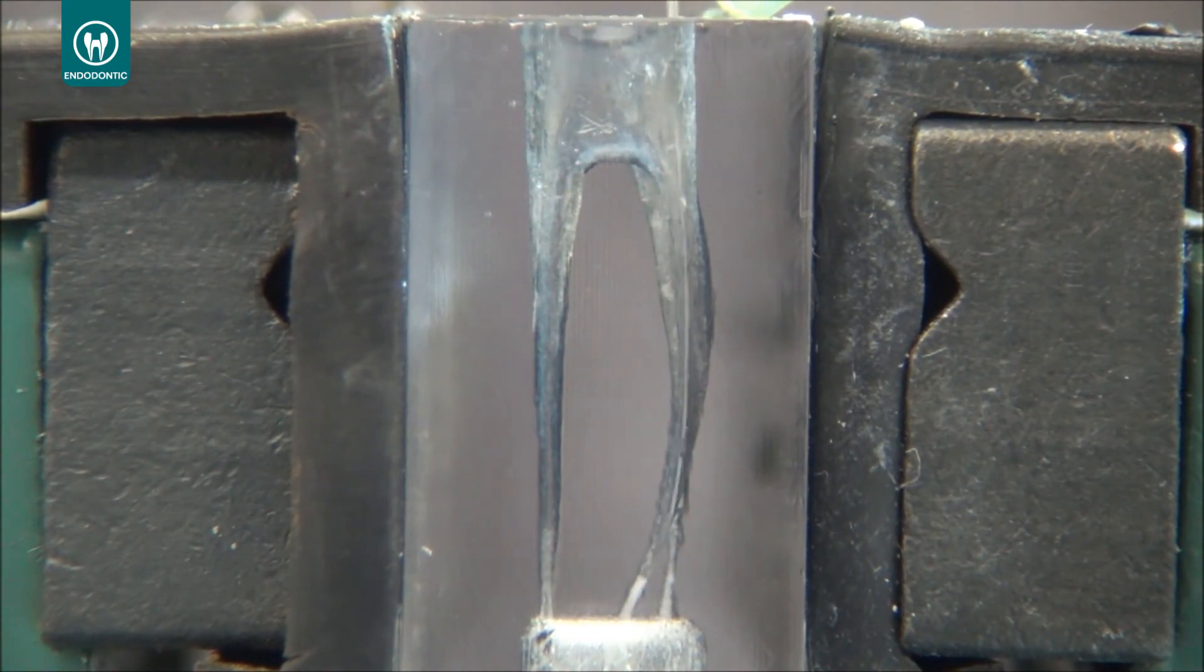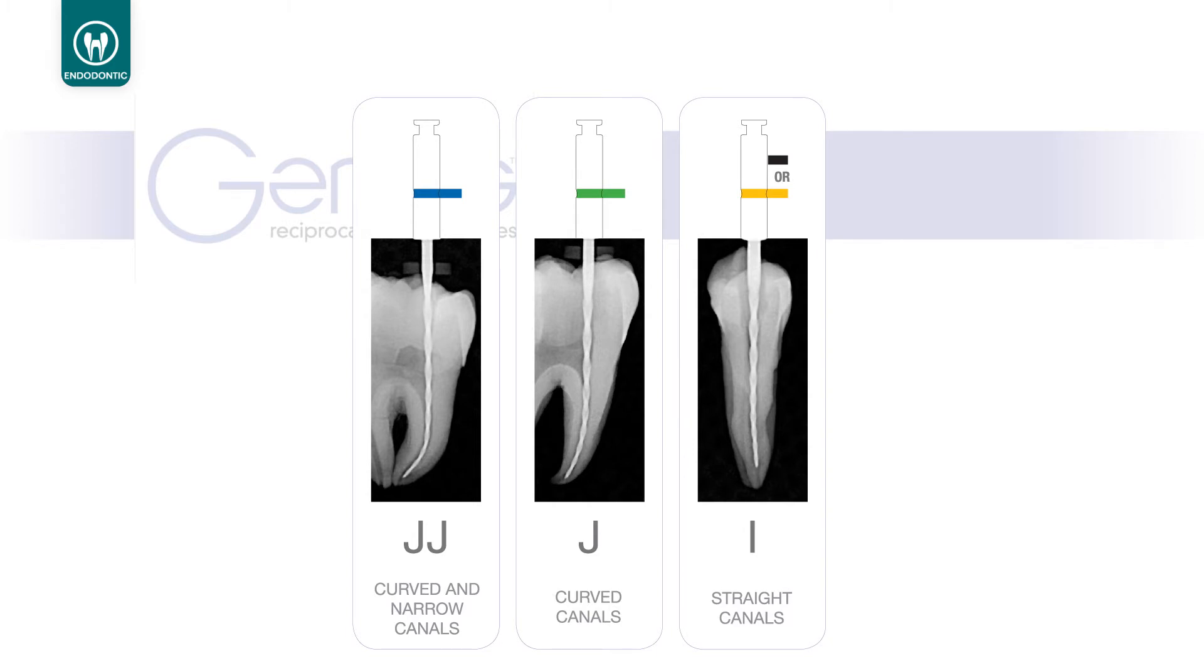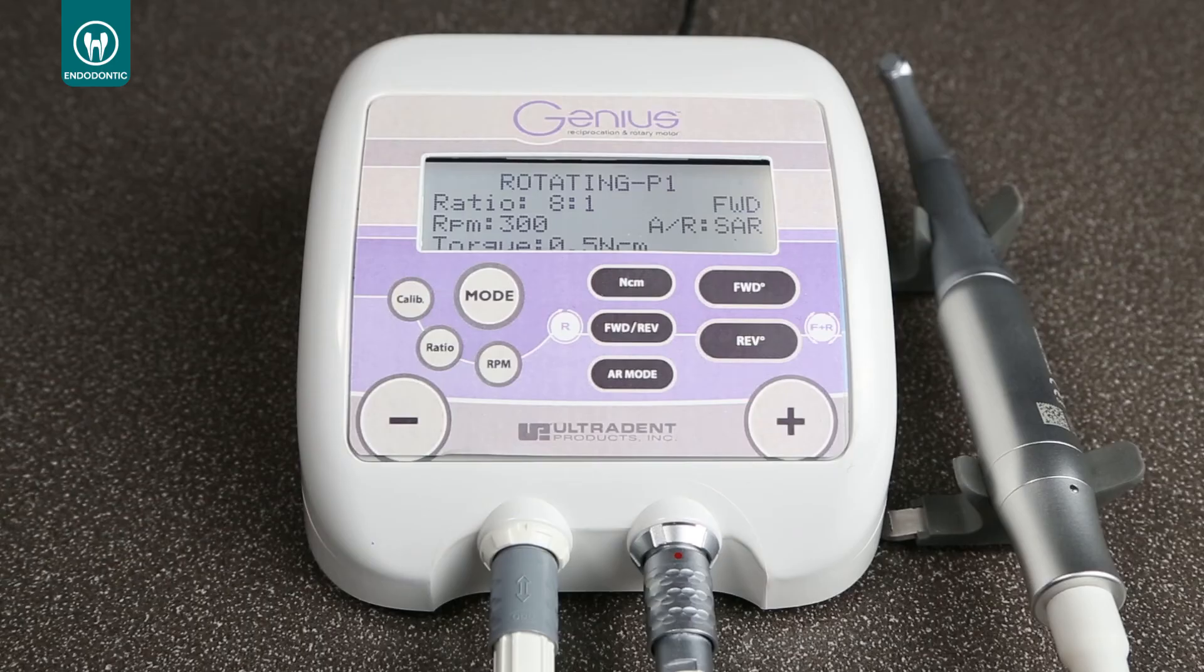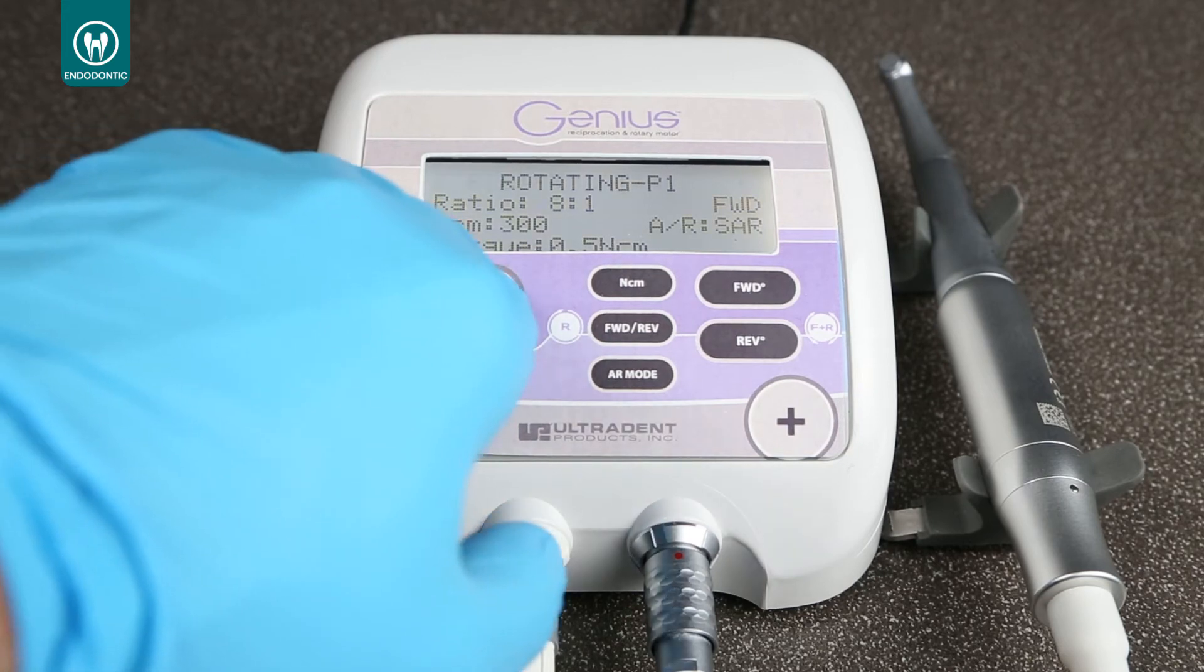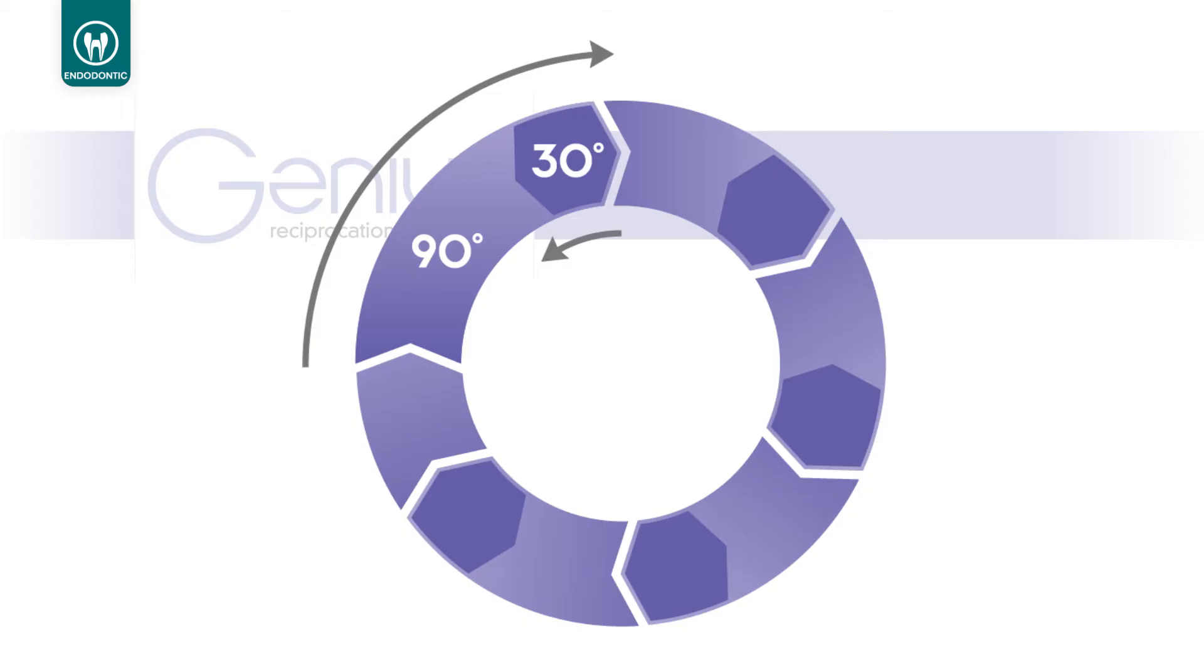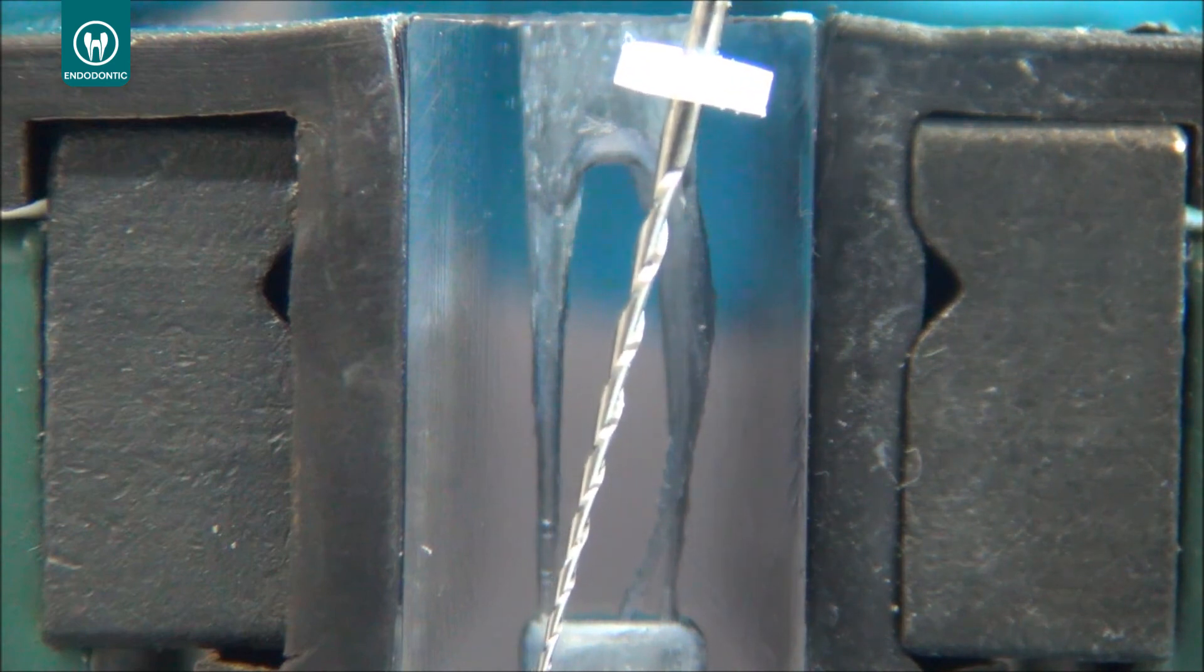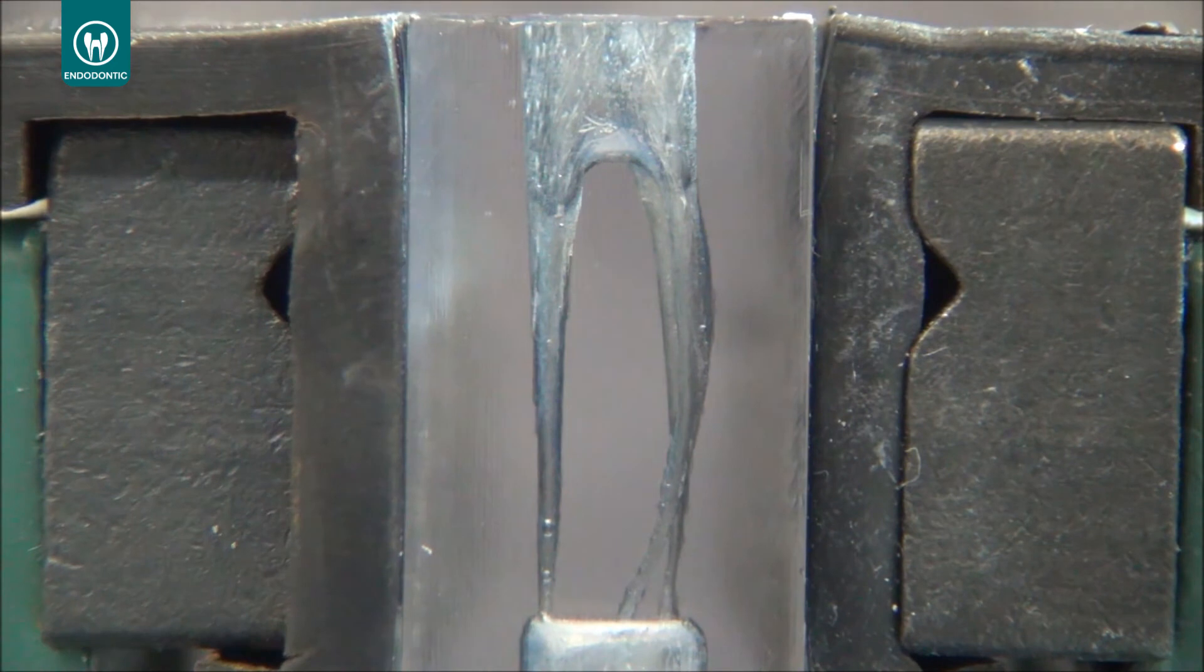After using the 2504 in reciprocation, you have to do a lot of irrigation to remove as much debris as possible, and then you decide based on anatomy what will be the final file. In this particular example here, we will use the 3504 because it's a curved canal, but it's not a narrow and curved canal. If you have a narrow and curved canal, you can go with a 30. In this case, it's just a curved canal, so it will be a 35. So again, in reciprocation, you go until the working length safely, and then using the 90-30 movement, and then you just switch from reciprocation to rotation to remove debris.